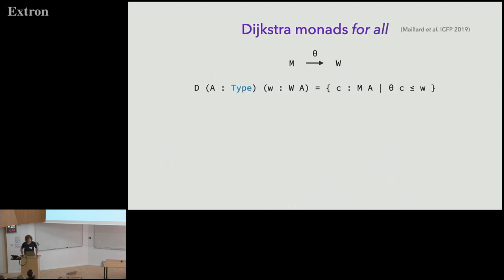And Dijkstra monads for all is a work that introduces a general way of building Dijkstra monads from both a computation monad m and a specification monad w. And together with what we call theta which is just a monad morphism between the two. So essentially the theta and the w consist in the semantics of your program. You're just giving it a meaning. So you associate to each program its specification. And then we can just define the Dijkstra monad by taking a computation such that its own specification is smaller than the w that we want to take.